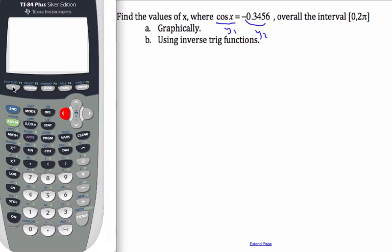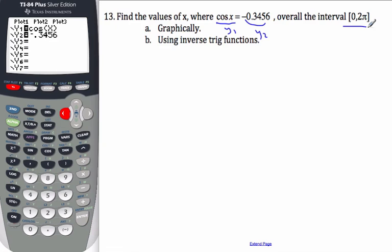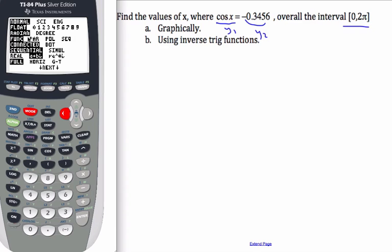If I go to my calculator, I get y equals, and I've had them entered already. My interval is 0 to 2 pi, which implies radians, so I'll look at my mode, and I've got it in radians.